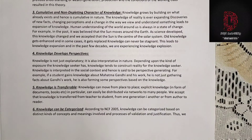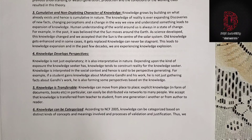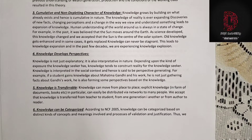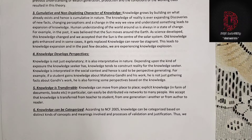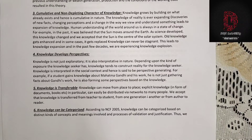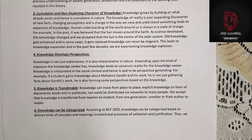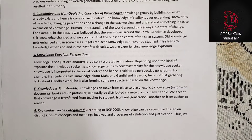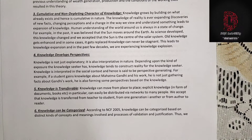The third characteristic is the cumulative and non-depleting character of knowledge. Knowledge grows by building on what already exists and hence is cumulative in nature. The knowledge of reality is ever-expanding — discoveries of new facts, changing perceptions, and a change in the way we view and understand something leads to expansion of knowledge. For example, in the past it was believed that the sun moves around the earth, but as science developed this knowledge changed and we accepted that the sun is the center of the solar system. Old knowledge gets enhanced and in some cases replaced. This leads to knowledge expansion, and in the past few decades we are experiencing knowledge explosion.